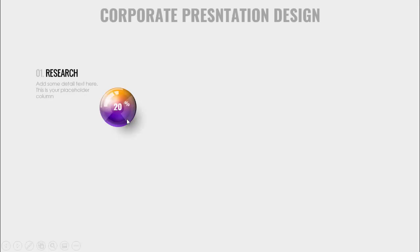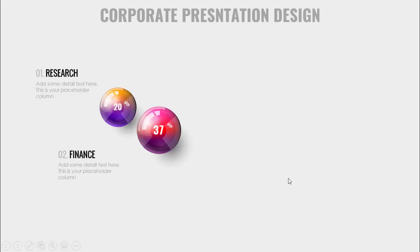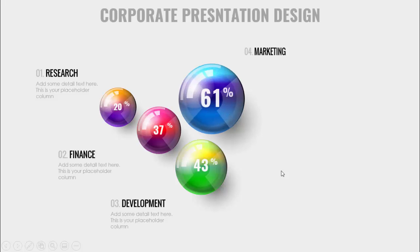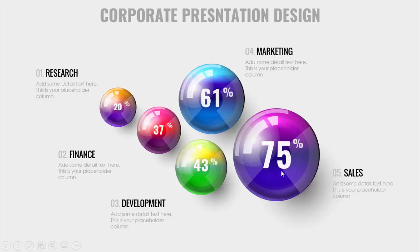In today's tutorial I'm going to show you how to create a five glossy circle options infographic slide in PowerPoint, and this can be used for your corporate presentation design. When you click, you can see a very colorful glossy circle appears with the first option — research — with a percentage of 20%, then finance, development at 43%, marketing at 61%, and sales at 75%. This is a very professional-looking presentation slide. Let's see how to do this in PowerPoint.